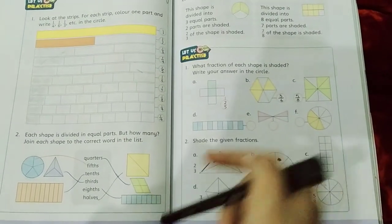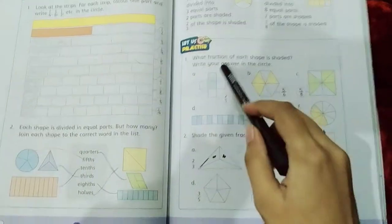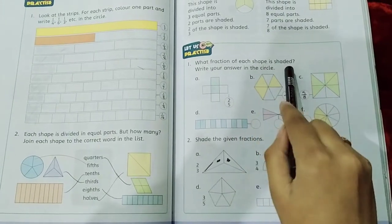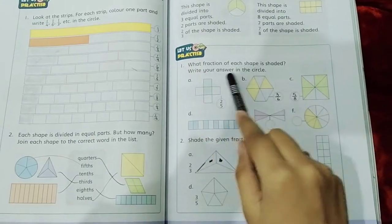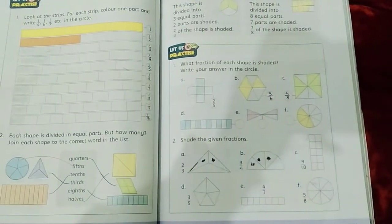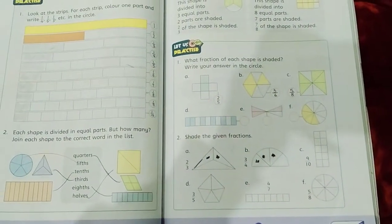Question number one: What fraction of each shape is shaded? Write your answer in the circle. We say that the shapes we have shaded it in fraction.